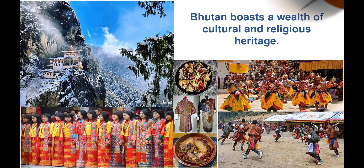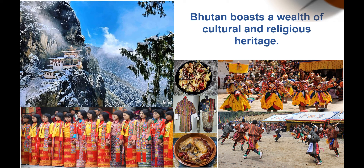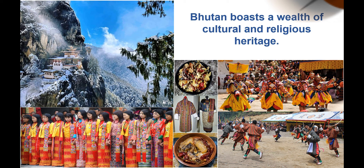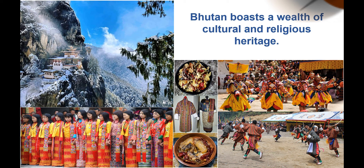Our country Bhutan has a rich cultural and religious heritage — from its unique places to its unique cuisine, our harmonious way of life, unique rituals, unique dresses, and unique religious figures. This is what makes us feel proud to be Bhutanese, and this motivated us to protect our unique culture and religion, which led to our topic: the Buddhist painting recognition system.